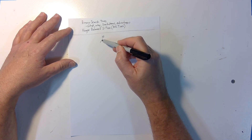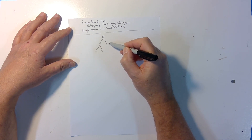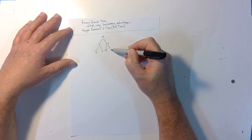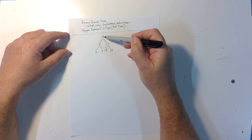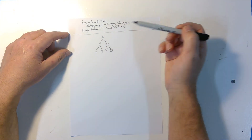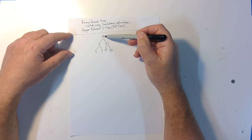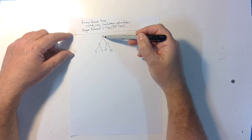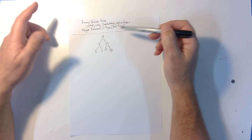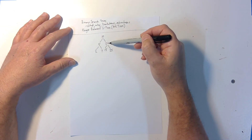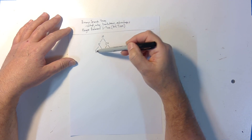Each node has up to two children, and the children have what we call the semantic property — they're organized in a particular way. For a binary search tree, the rule is: for any node, the nodes on the left are smaller than that node and the nodes on the right are bigger. For example, for node 10, five, two, and seven are all smaller, and 20, 15, and 25 are all bigger. That rule applies to every node — for node 20, all nodes on the left are smaller and all on the right are bigger. For node five, two is smaller and seven is bigger.